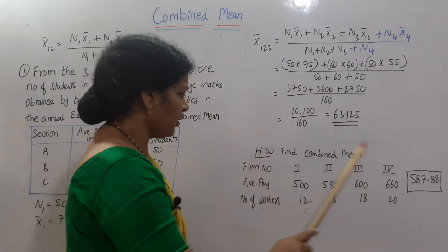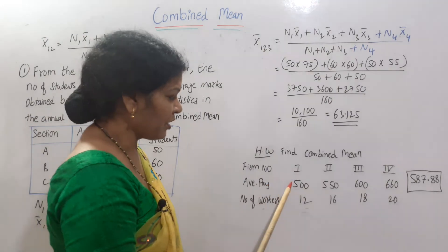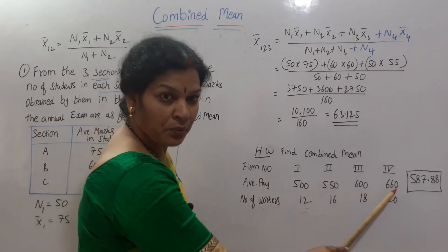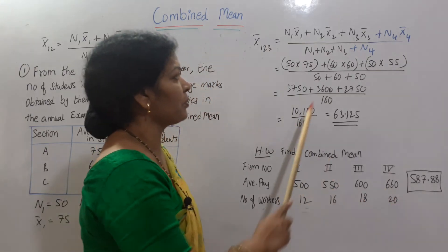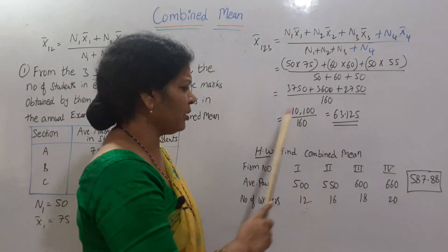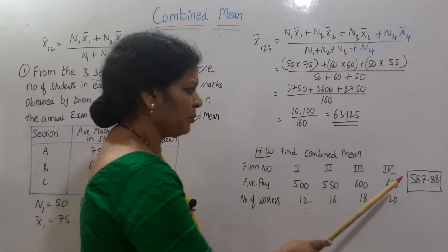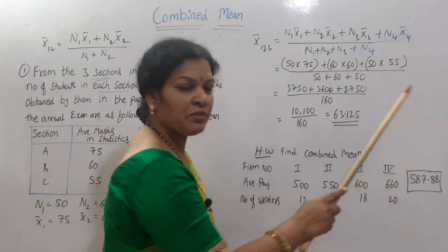Now 4 forms, average pay: X bar 1, X bar 2, X bar 3, X bar 4. Number of workers: n1, n2, n3, n4. This, apply it in the formula. And this is the problem. Your answer should be 587.88. Am I clear?